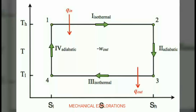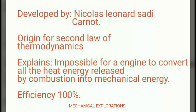Looking at the TS diagram: 1 to 2 represents the isothermal process where heat is added, and 2 to 3 represents the adiabatic process where heat H equals zero, for expansion. This is followed by isothermal compression, where heat is given out, and adiabatic compression.